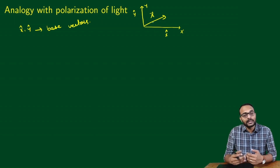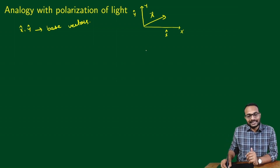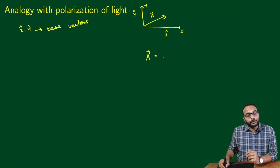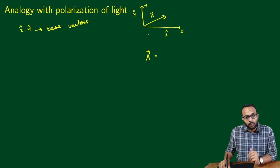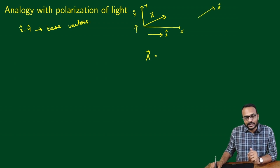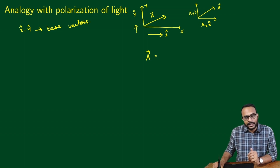Any vector in this plane can be written as a linear combination of these base vectors. For example, vector A can be written as a resultant of two vectors — you can decompose A into two directions: one in the X direction and the other in the Y direction. We call these AX X̂ and AY Ŷ.